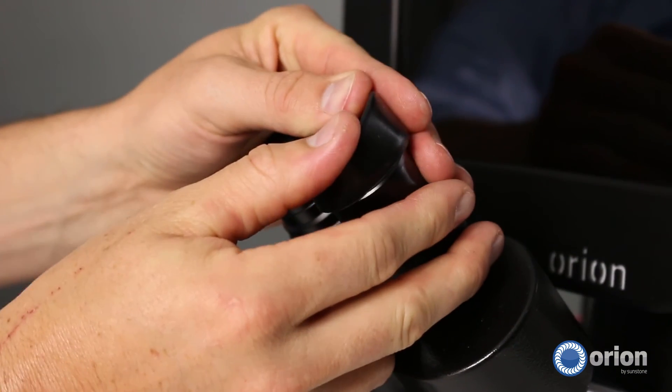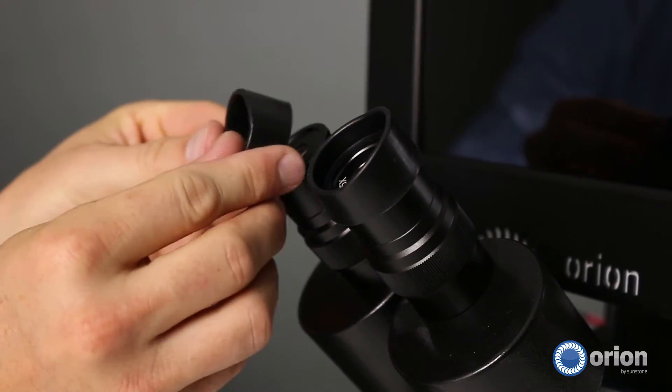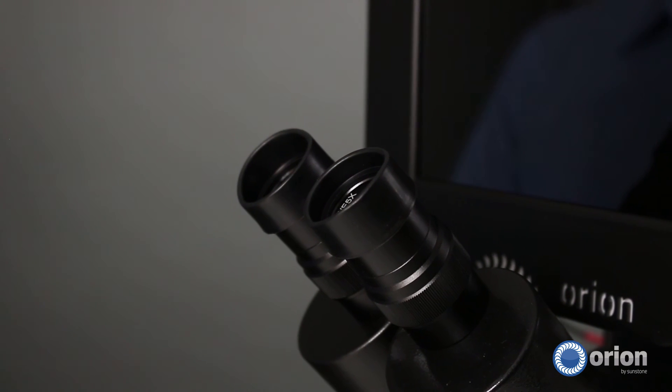Place the covers onto the eyepieces on the microscope. Adjust to your comfort preference. Now you are ready to weld using the stylus and microscope.